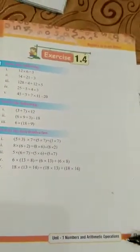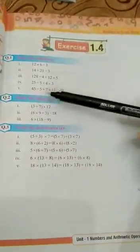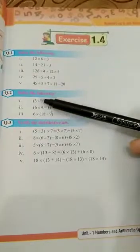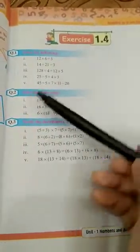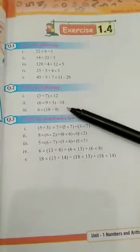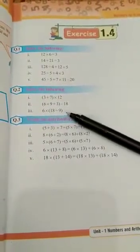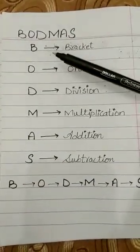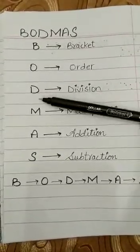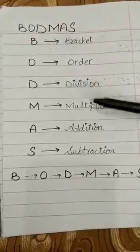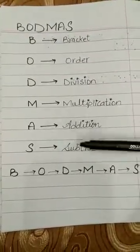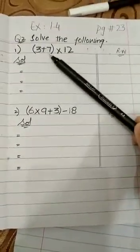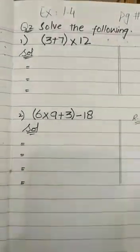Now the second question of Exercise 1.4, page 23 is: solve the following — (3 + 7) × 12. I will explain what BODMAS is. B means Bracket, O means Order, D means Division, M means Multiplication, A means Addition, S means Subtraction. When we have a bracket in a question, we solve the bracket first.